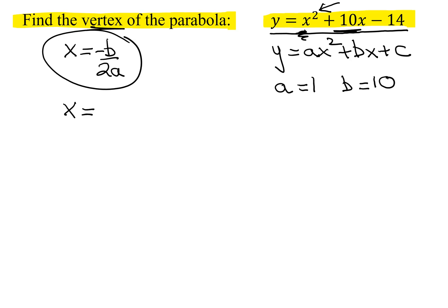So x equals the opposite of b. Well, b is 10, so that's negative 10 over 2 times a, which is 1. So it's negative 10 divided by 2, which is negative 5. I've already found the x-value of the vertex. I know it's at x equals negative 5.